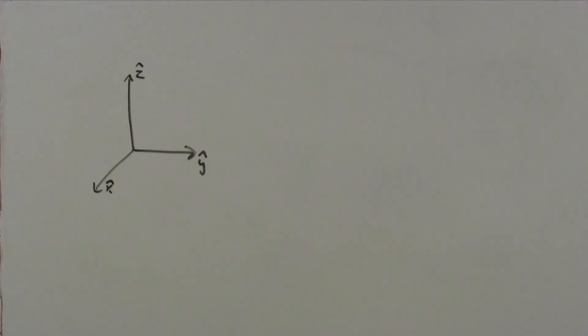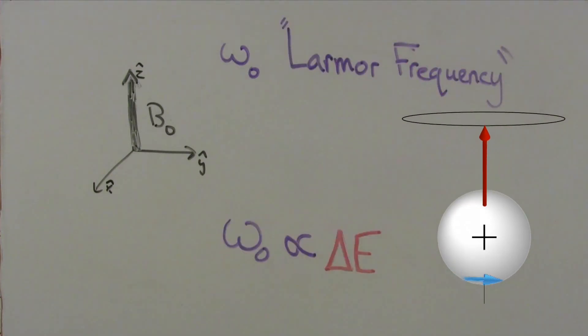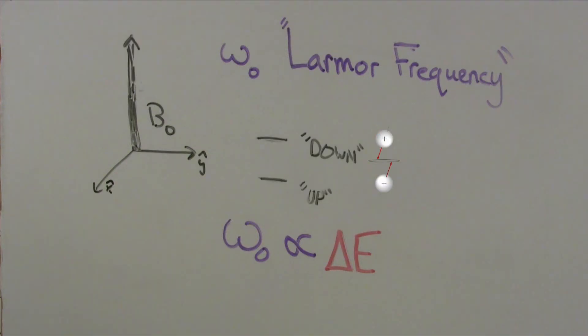When these nuclei are under a magnetic field, and therefore exist in the up or the down spin state, they also precess, that is, their dipole, or axis of spin, rotates about the external field direction. This precessional frequency, or the Larmor frequency, is directly proportional to the energy gap between spin states. So, the larger the energy gap, the faster the nucleus precesses in either the up or down spin state.